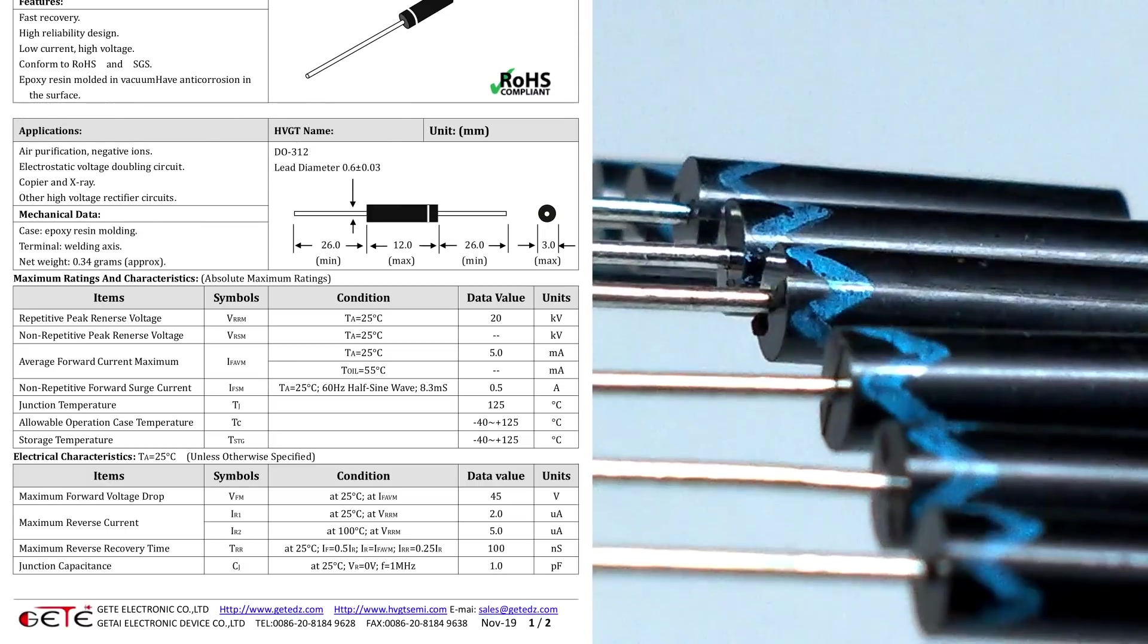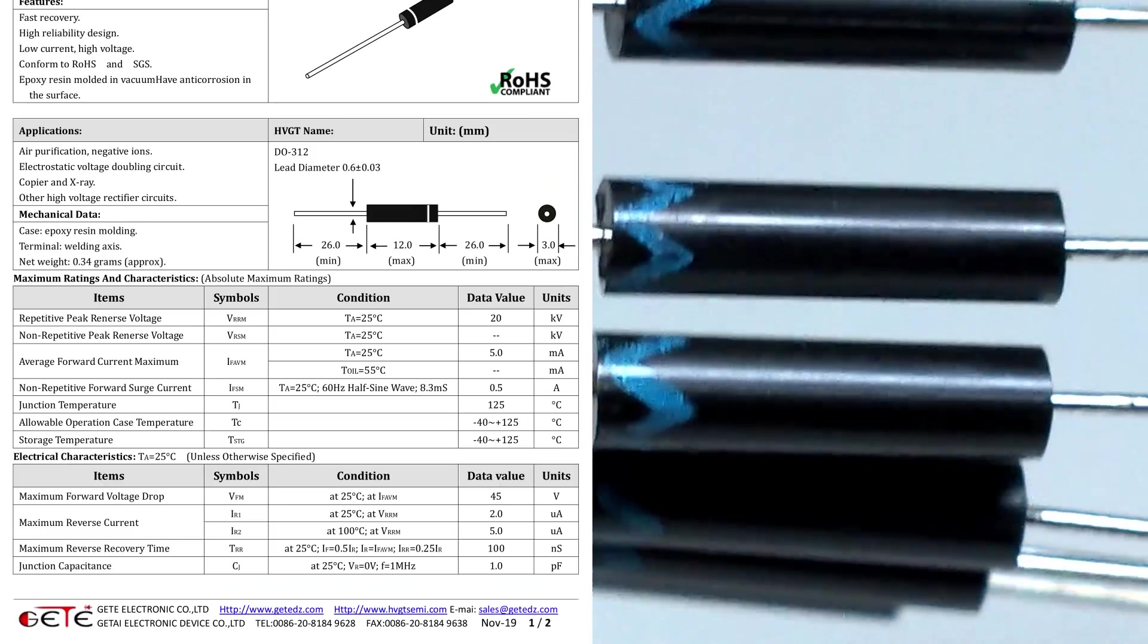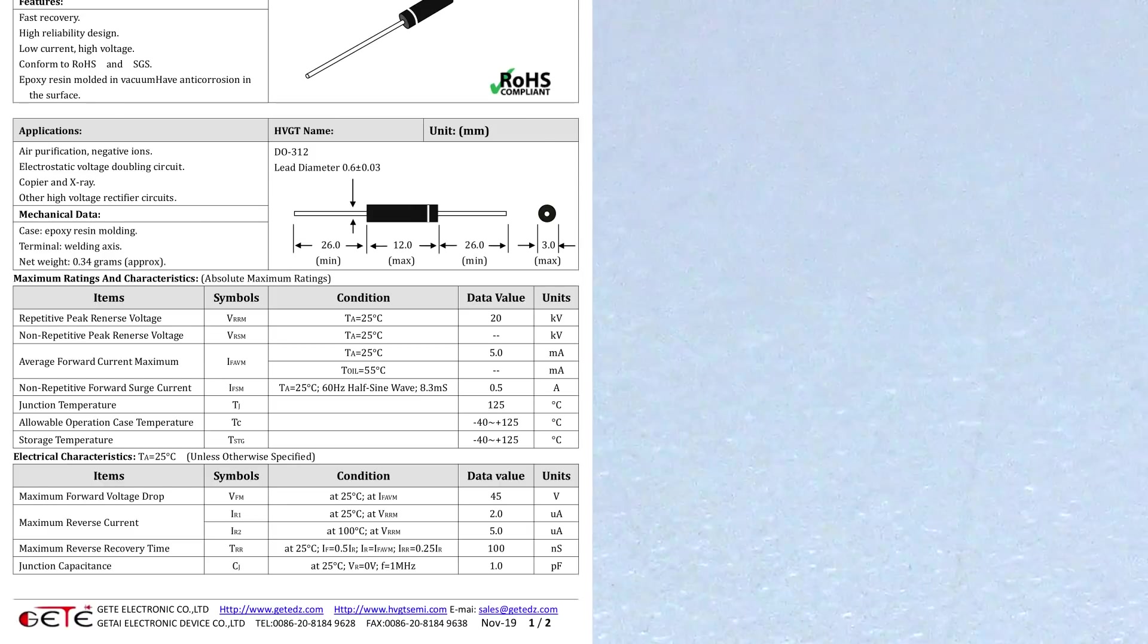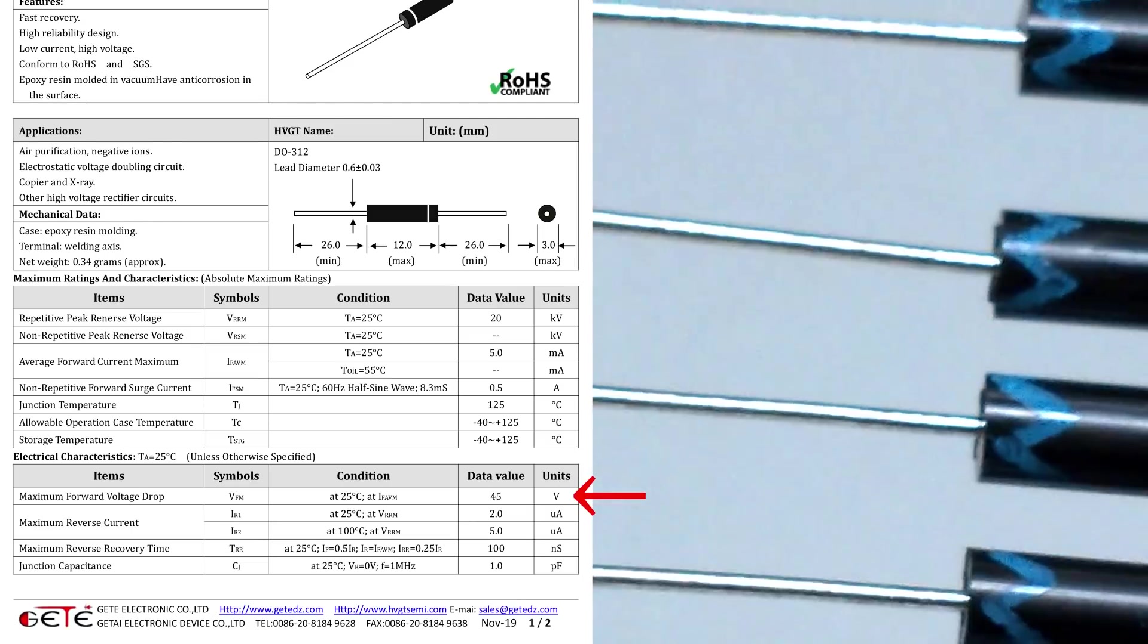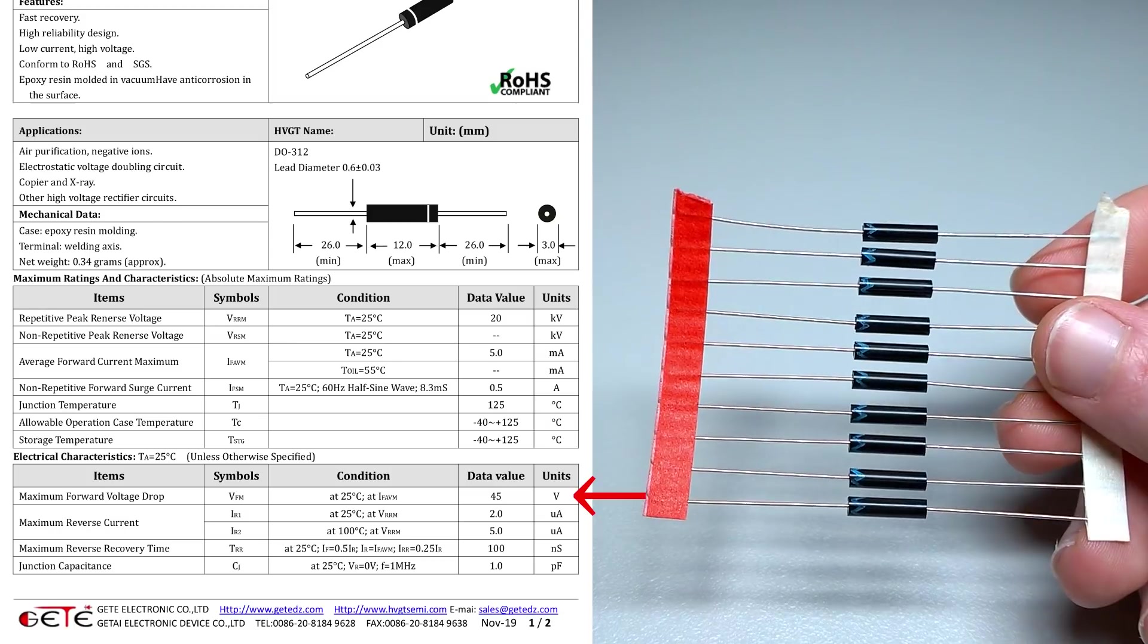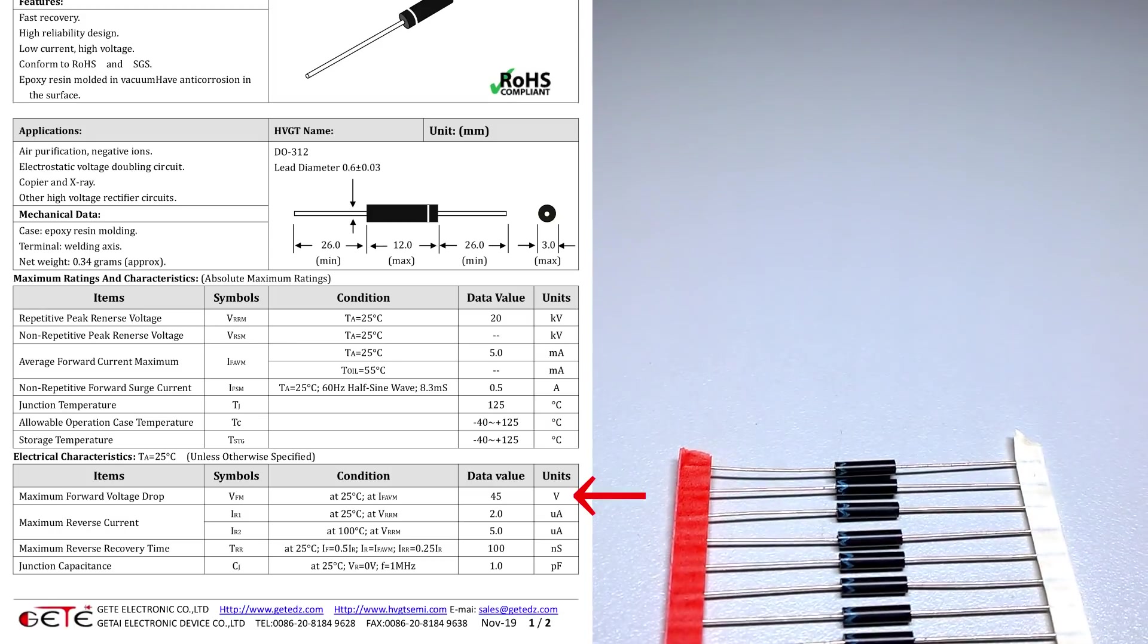However I'm not quite sure how these are manufactured. Although looking more specifically at the datasheet, we can see this maximum forward voltage drop is 45V, which makes me think this is actually just a whole bunch of normal silicon dies stacked on top of each other in order to reach a 20kV breakdown voltage.